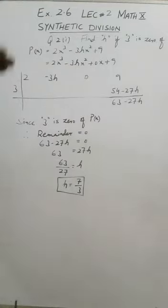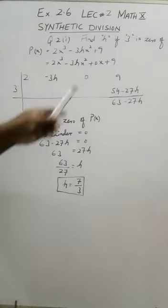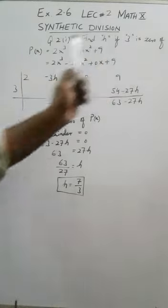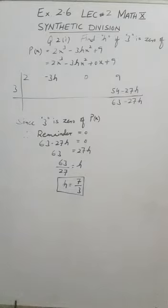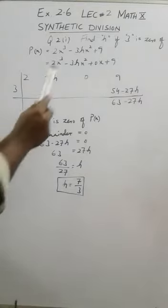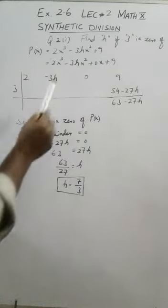First we do the process of synthetic division, and then I will explain what is meant by 3 is zero of polynomial. Which term is missing? Yes, the term containing x is missing.